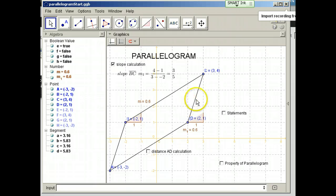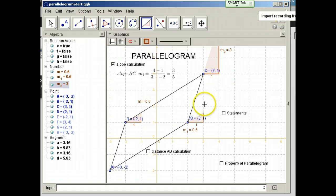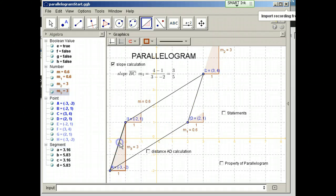I can also find the slopes of these segments. This slope is 3. This slope is also 3. And so these opposite segments are also parallel.